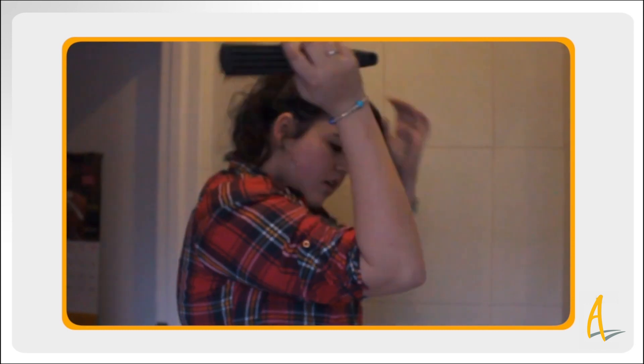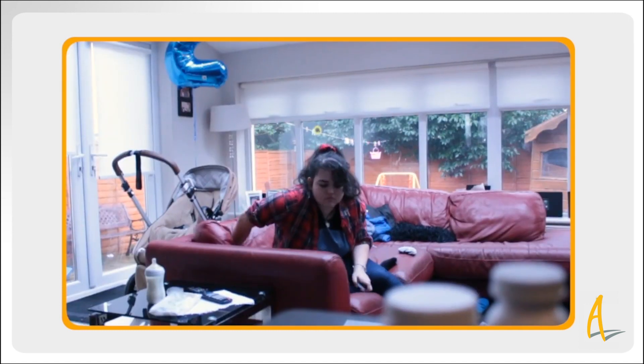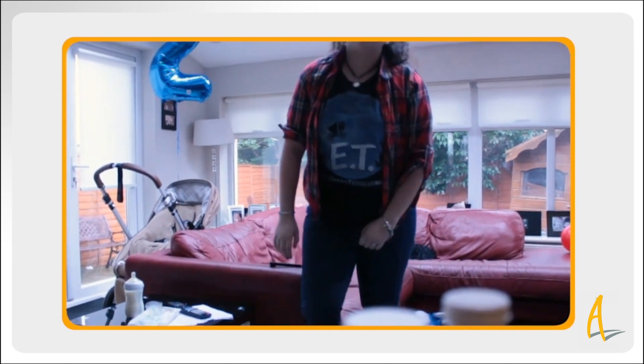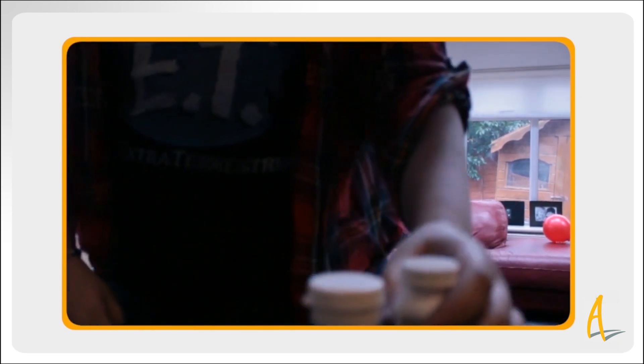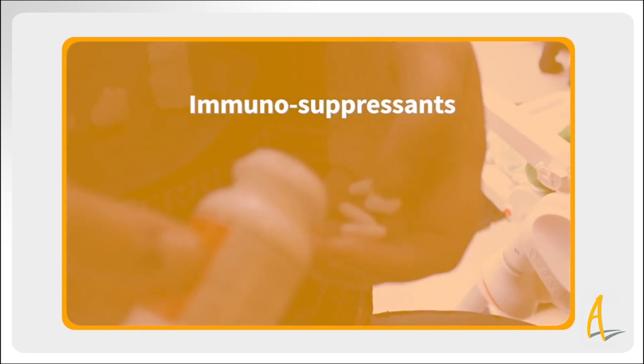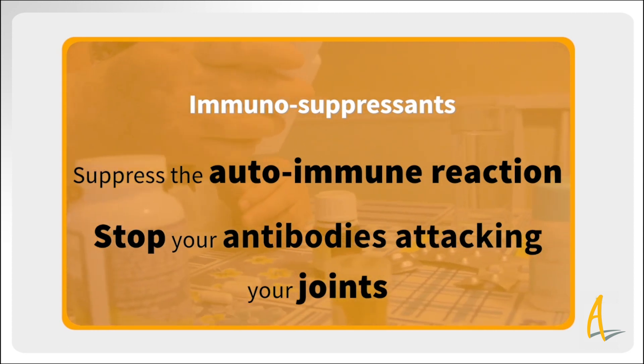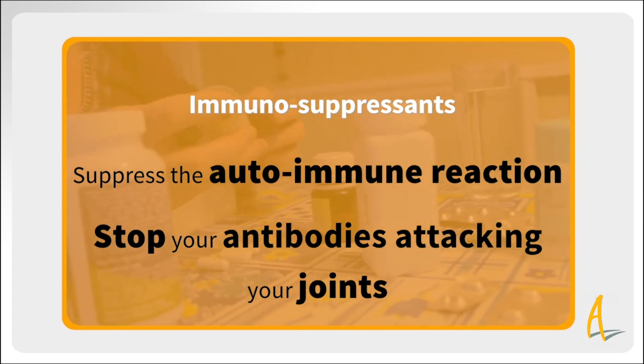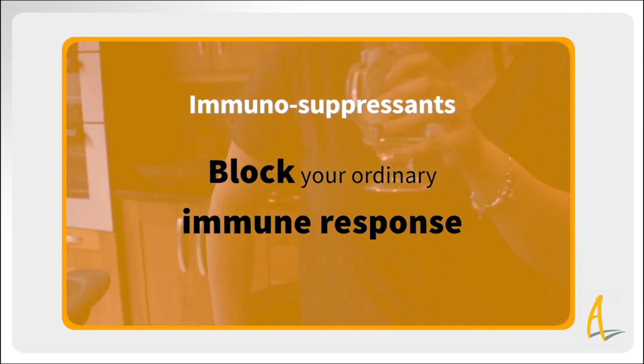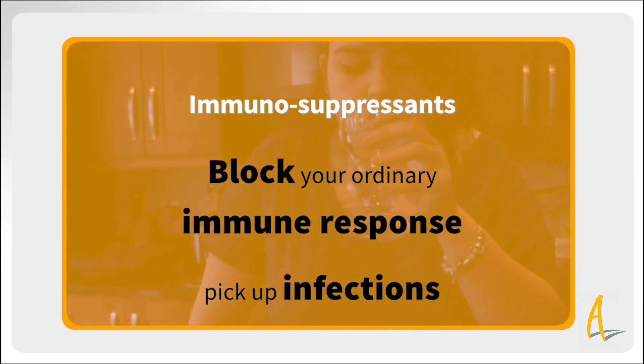Inflammation can come and go, causing flare-ups which can persist for a long time. During a flare-up, the autoimmune reaction can affect other parts of the body also, and you may feel generally unwell. Part of the treatment for autoimmune disease can be to take medication which suppresses or blocks your immune system. These are called immunosuppressants. They suppress the autoimmune reaction, which is good because they stop your antibodies attacking your joints. However, they also block your ordinary immune response, and you can therefore pick up infections more easily.